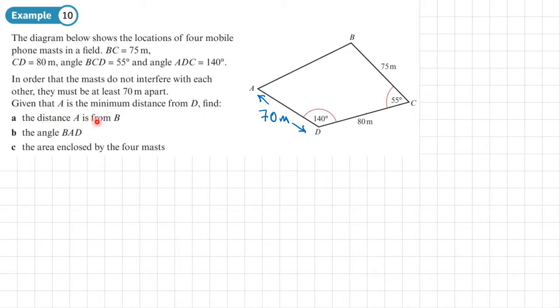Find the distance from A to B. So in part A, we need to work out what this distance is here. Now we've got a quadrilateral and we've been dealing with triangles, so we need to split this into triangles.